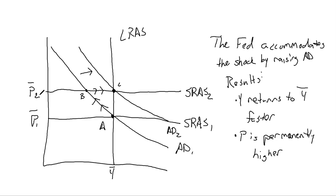The Fed tried to combat supply shocks by raising aggregate demand. When we had these continuous supply shocks — the price of oil kept going up — they kept having to raise aggregate demand, and we kept converging to long-run output at a higher price. Therefore we had higher inflation for a really long time.